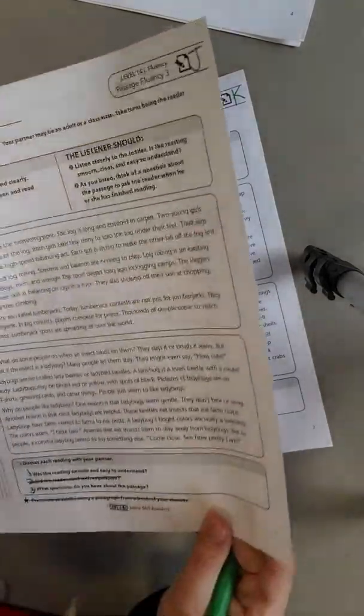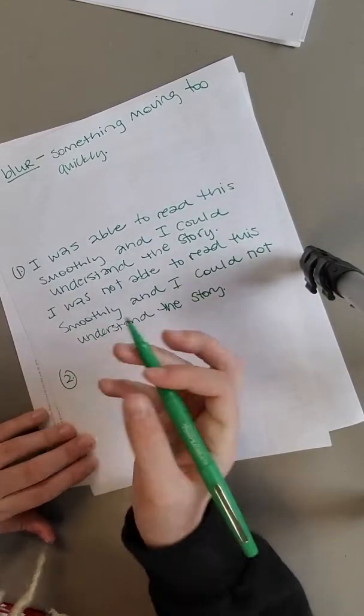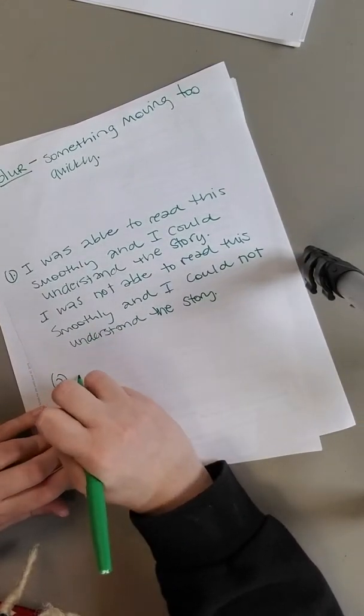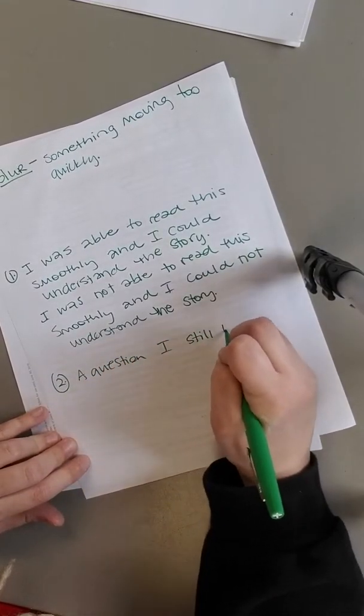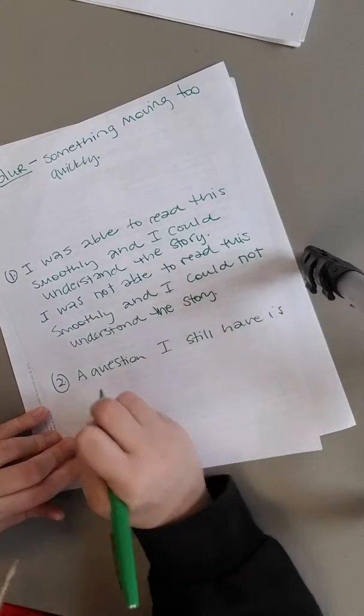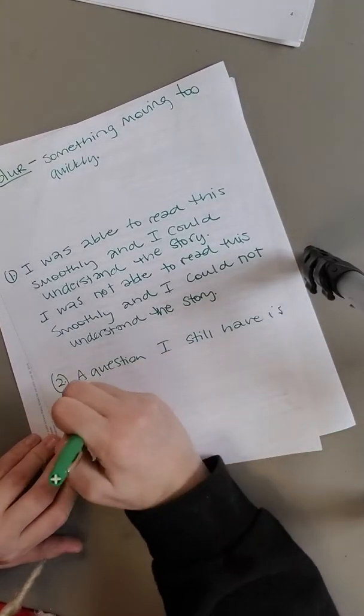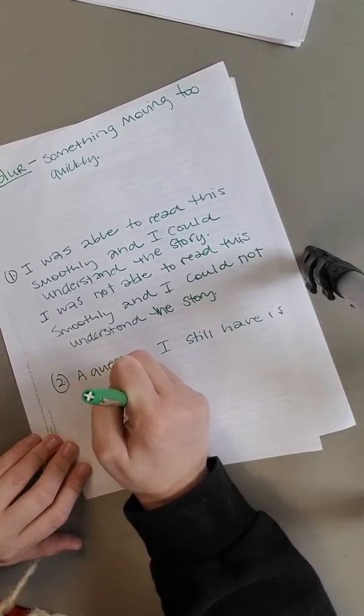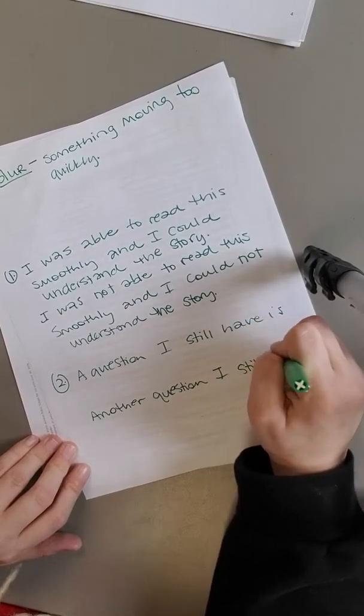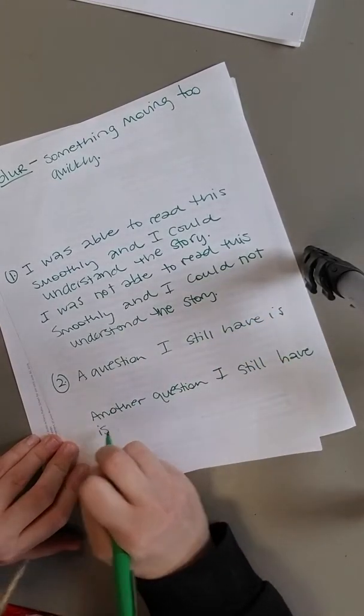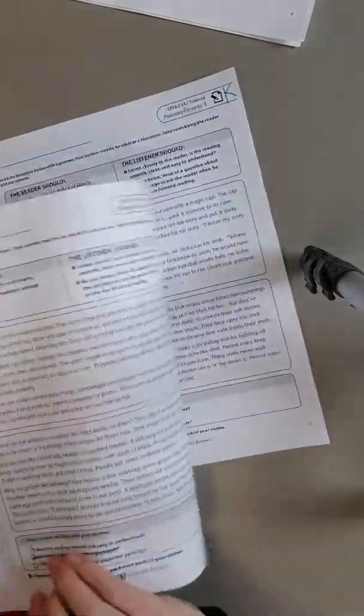Then for the last question, it says, what questions do you have about this passage? I want you to come up with two questions. So a question I still have is, why did something happen? What does this mean? Who is this? Another question I still have is blank. So you're filling this in with a question that you still have about this story.